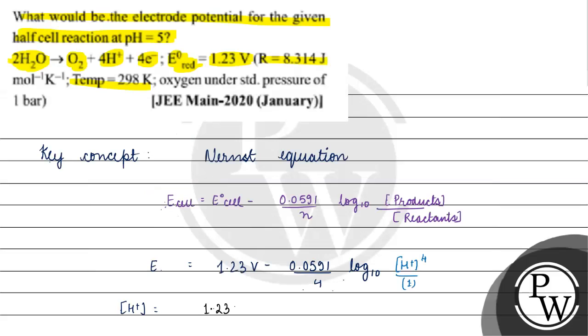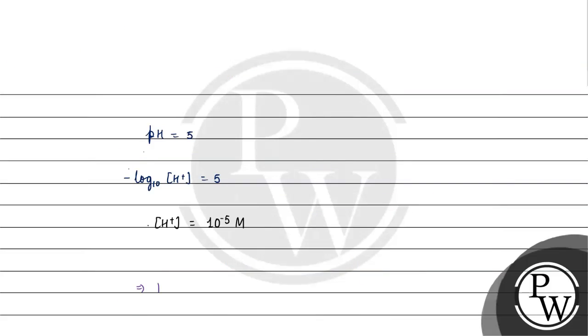So what will we have? 1.23 volt minus 0.0591 by 4 log base 10. H plus concentration is 10 raised to the power minus 5, power is 4. So 1.23 volt minus 0.0591, 1 by 4.